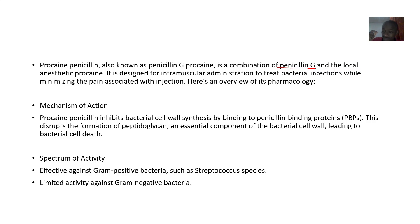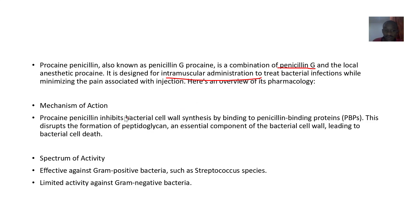Penicillin G is the antibiotic component, and it's combined with the local anesthetic procaine used in general anesthesia. It is designed for intramuscular administration to treat bacterial infections, and the procaine is included to reduce pain at the injection site — so it functions as a combination therapy.